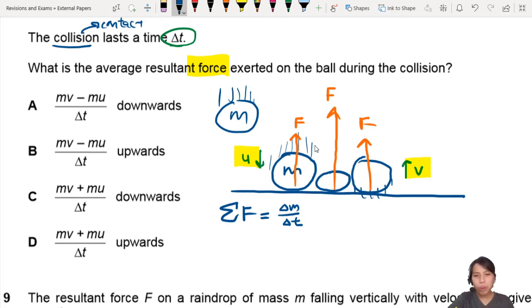So the change in momentum during this impact time of delta T. So the net force is what our average resultant force is what we're looking for. So change in momentum will be the final velocity minus the initial. Now there's one thing to be very careful of.